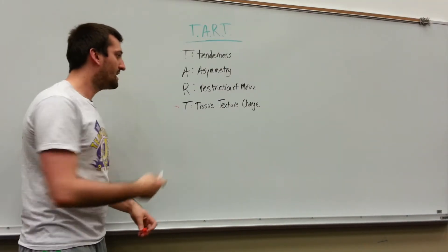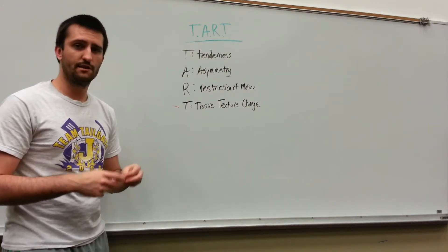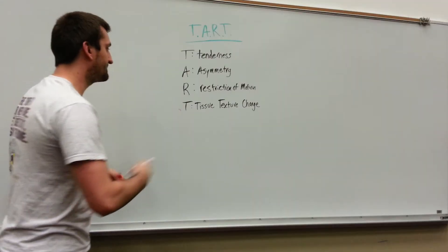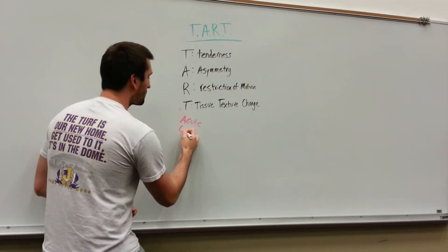And lastly, the major one is going to be the tissue texture change associated with the TART acronym. So there's going to be two different types of tissue changes. There's going to be acute, and there's going to be chronic.